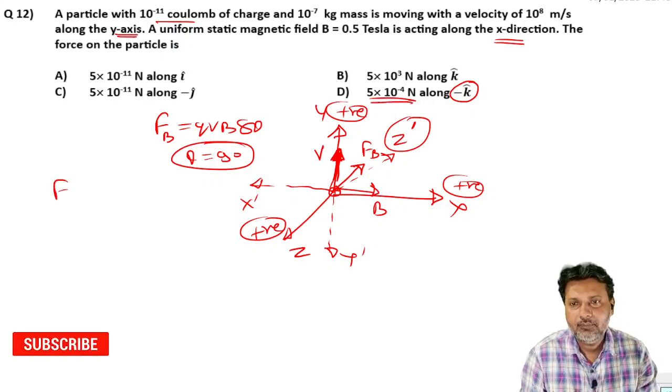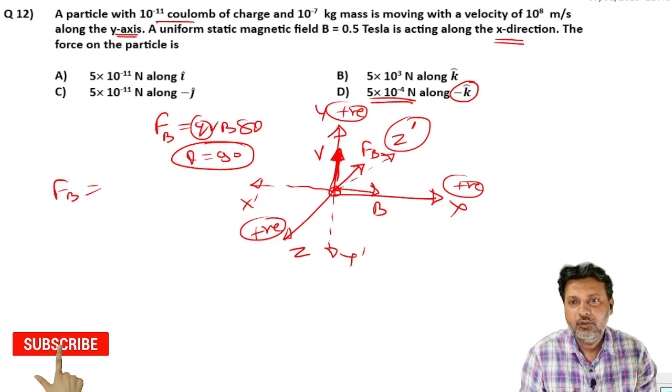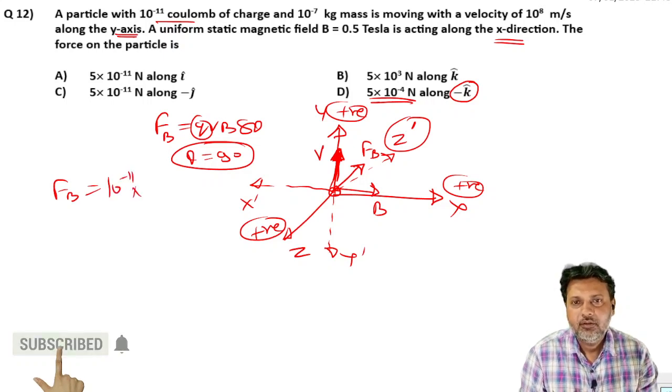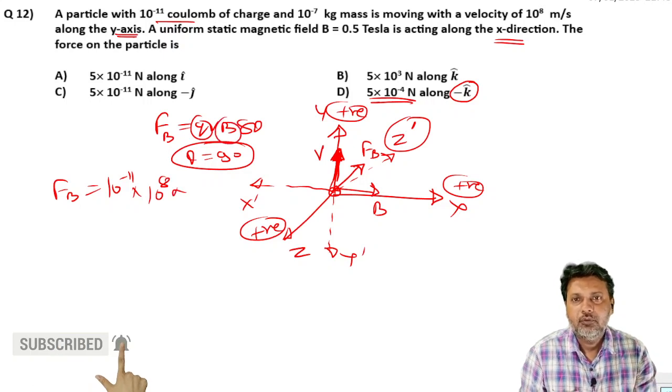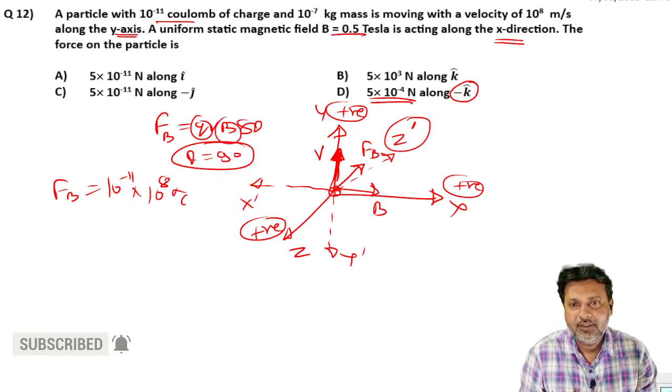Now solving for the value: q value is 10 to the power minus 11, v ki value 10 to the power 8, B ki value 0.5 Tesla.